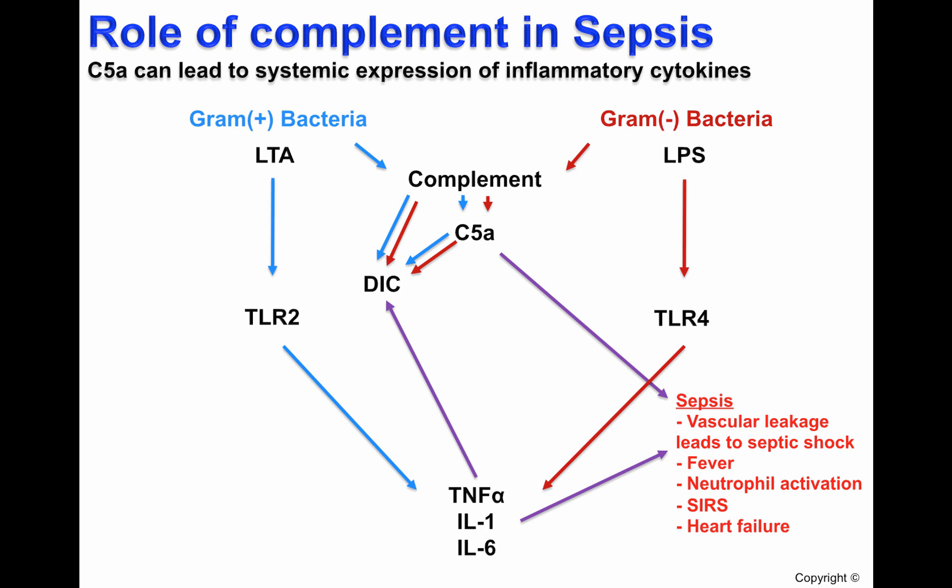In summary, complement activation — specifically C5a production — has many roles in inflammation. C5a activates macrophages and neutrophils for efficient phagocytosis, participates in chemotaxis, activates mast cells to produce pro-inflammatory cytokines, and is important in systemic inflammation such as sepsis. In addition, we have shown the role of IL-6 as a cytokine capable of promoting the acute phase response, leading to production of MBL, CRP, and other complement proteins during the process of inflammation.